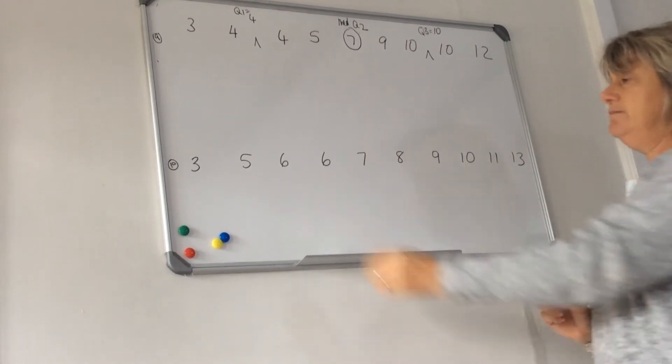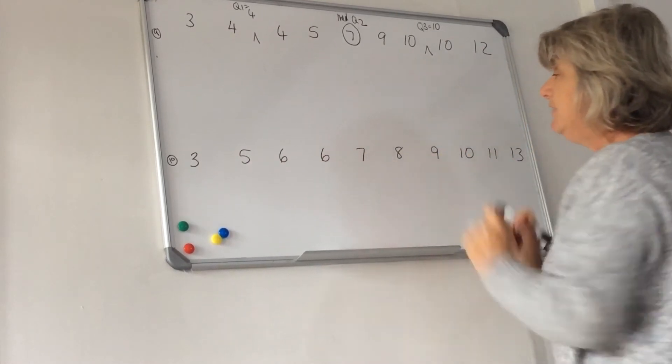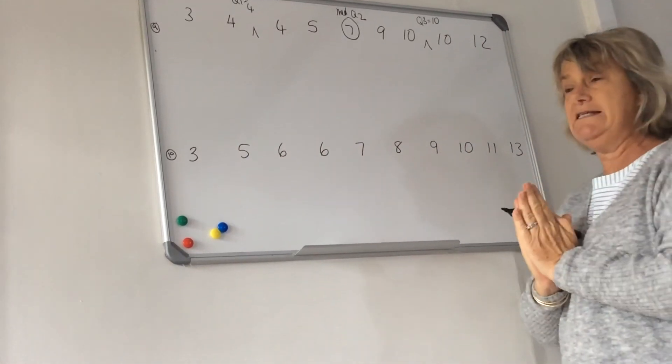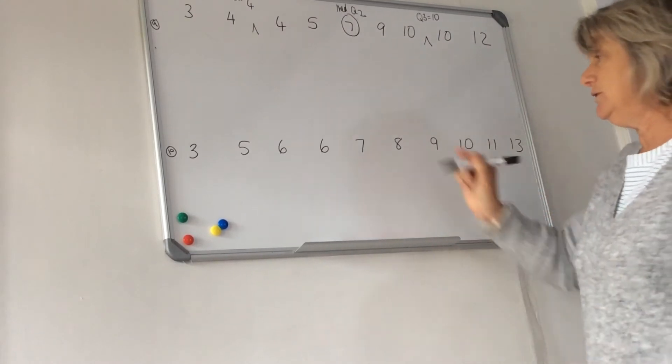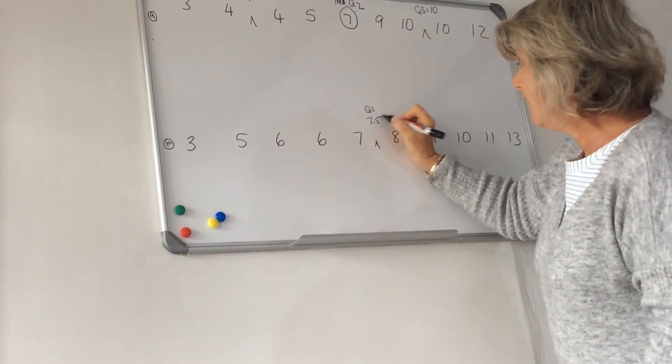So there are two numbers in the middle. One, two, three, four, five. One, two, three, four, five. Seven and eight. So seven plus eight is fifteen. Fifteen divided by two is seven and a half. So my quartile two, or median, is seven comma five.